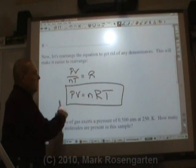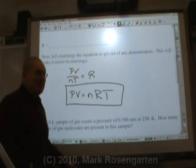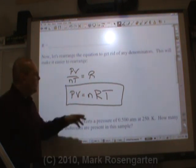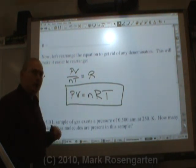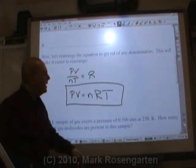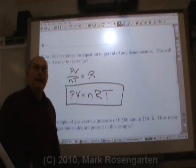Or as we like to call it, pivnert. Get it? Pivnert. The pressure in atmospheres times the volume in liters is equal to the number of moles of gas you have trapped times this universal gas constant, 0.0821, times the temperature in Kelvin.